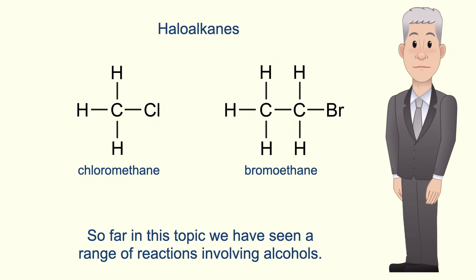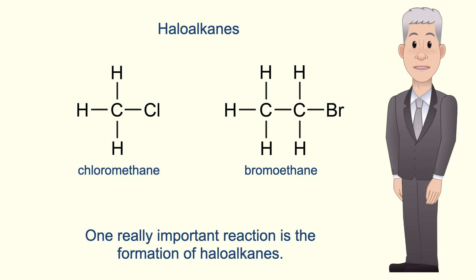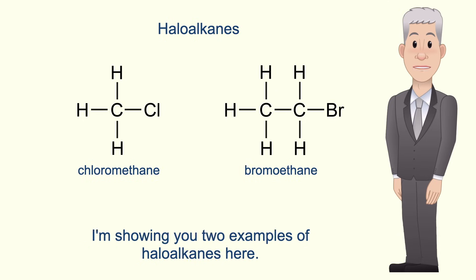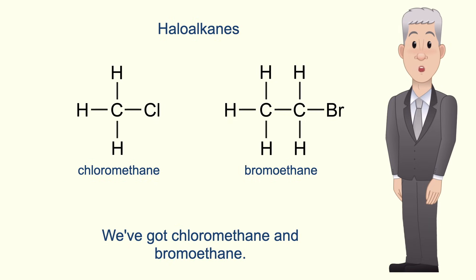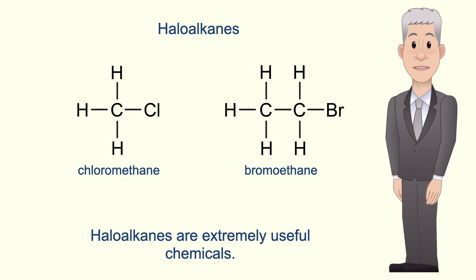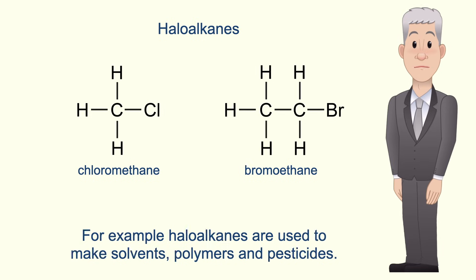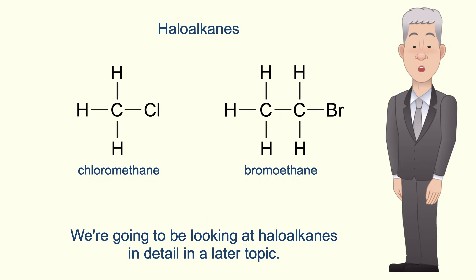So far on this topic we've seen a range of reactions involving alcohols. One really important reaction is the formation of haloalkanes. Examples include chloromethane and bromoethane. Haloalkanes are extremely useful chemicals — they are used to make solvents, polymers and pesticides. We'll be looking at haloalkanes in detail in a later topic.